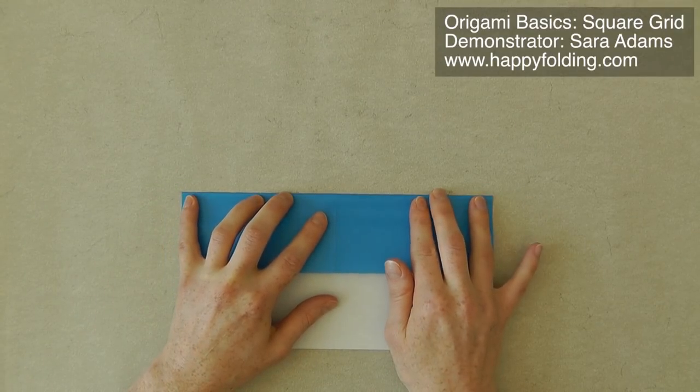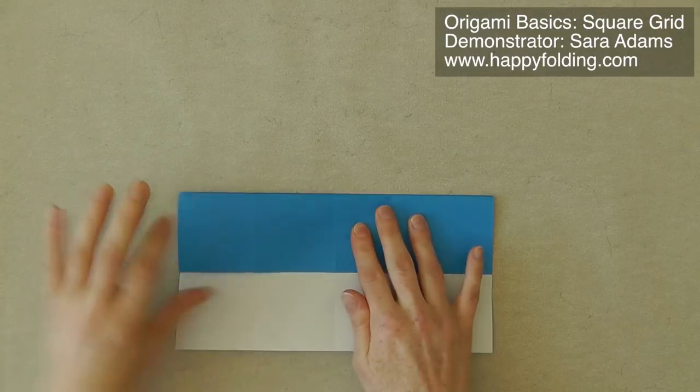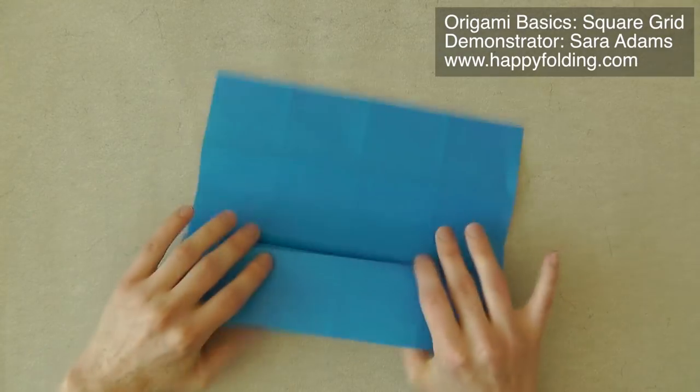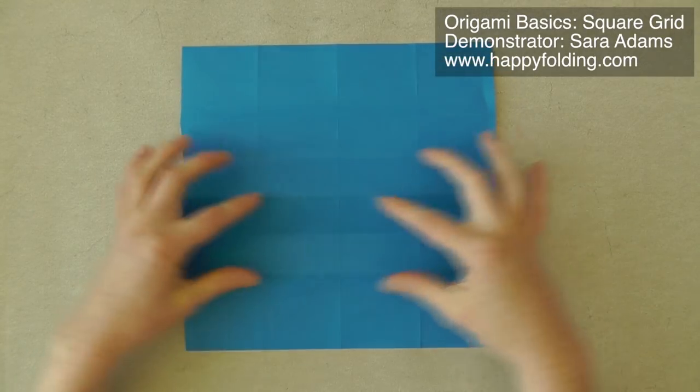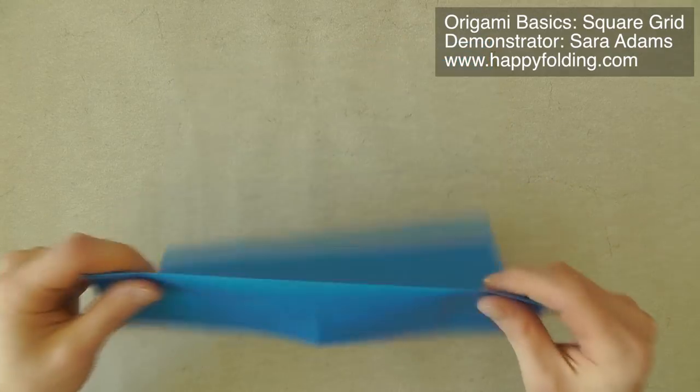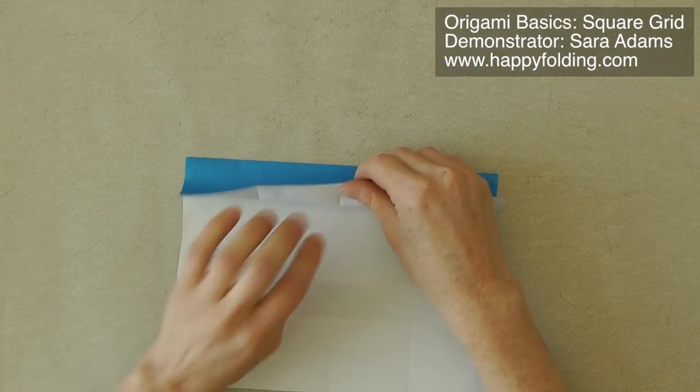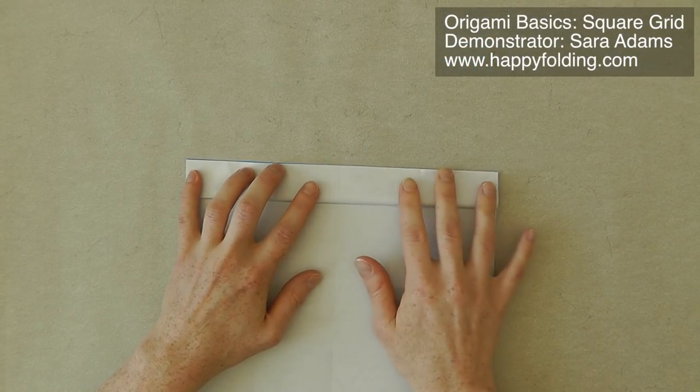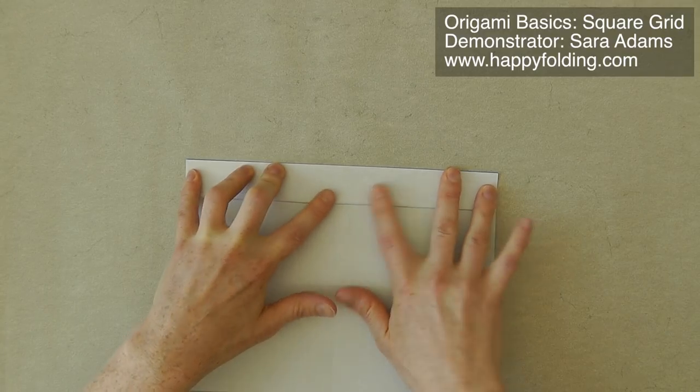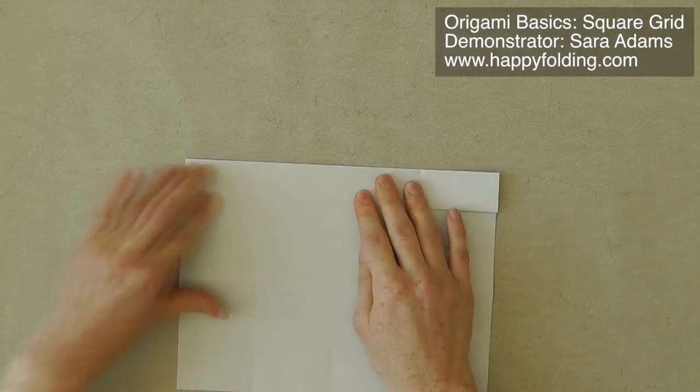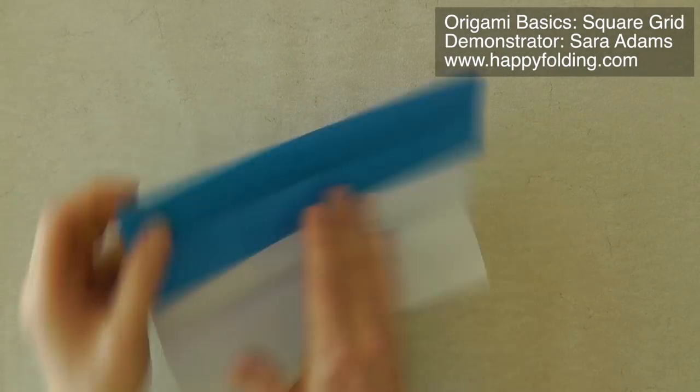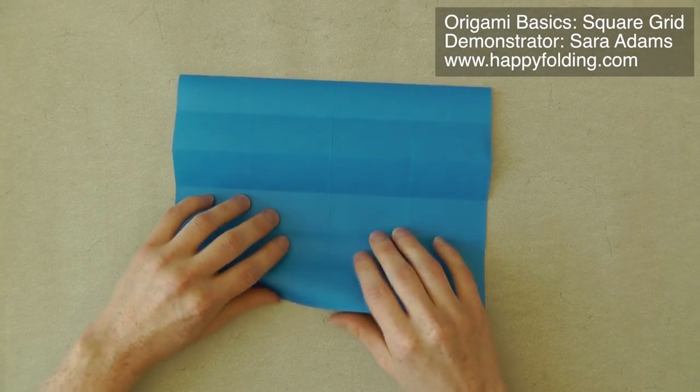It's actually the case that like this, any errors you make in the beginning of creasing accurately, they get smaller and smaller because by always dividing into half, you're also dividing the error into half. So if you made a small error in the beginning, it's going to get smaller and smaller the more divisions you make, and so the grid gets more and more accurate.